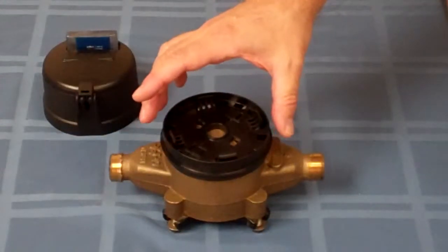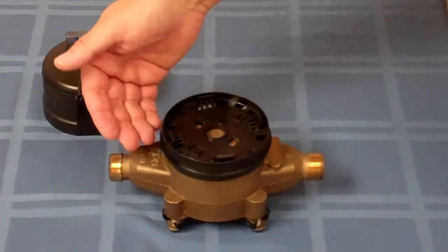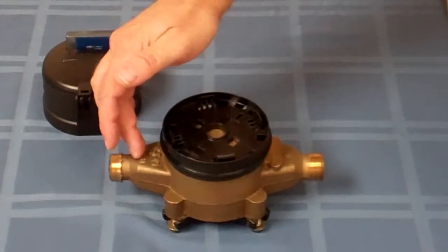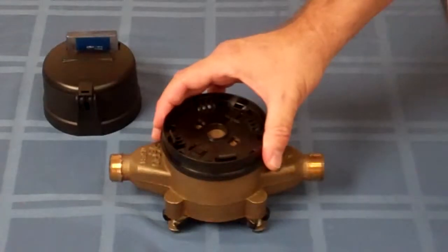You'll notice a little bit of play there. That's quite normal. And you'll also notice, as you do multiple installations, that there's a great deal of variance in the casting of the brass, and that will determine how difficult or how easy it is to snap this ring together.